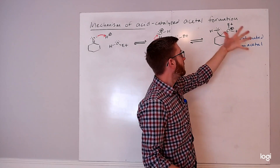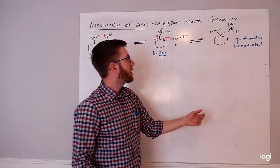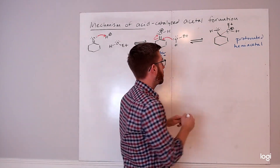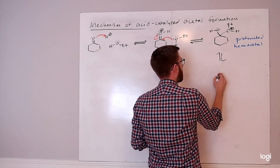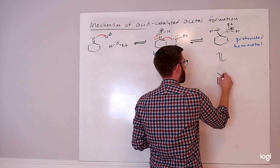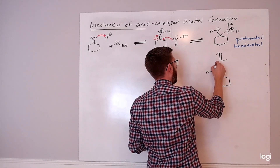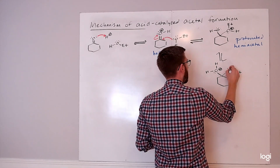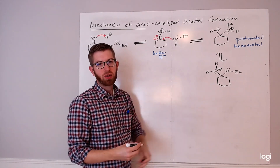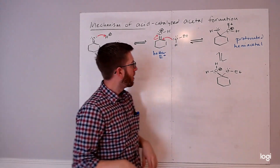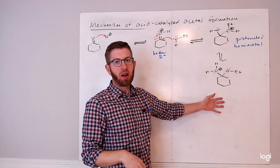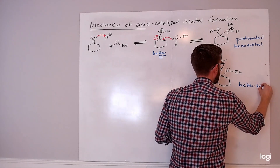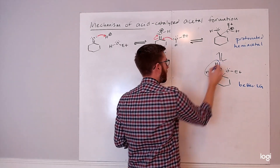Besides the proton dissociating to give the hemiacetal, the other thing that could happen is that this proton could be transferred to the other oxygen of the structure. If we show this as an intramolecular proton transfer, we end up with a structure that now has an appropriate alcohol on the structure — which means we now have a good leaving group, specifically a water molecule.